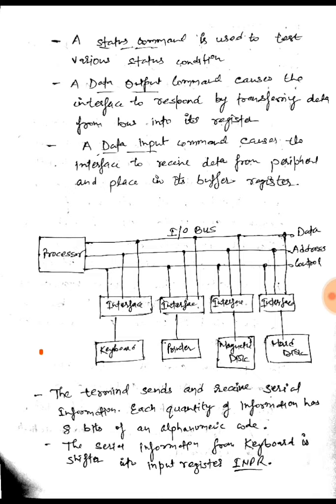In the block diagram, a processor has several I/O buses — data bus, address bus, and control bus — and all input-output devices have access to these buses using their interfaces. These interfaces communicate with the processor on behalf of the I/O devices and synchronize the transfer of data between the processor and devices such as the keyboard.